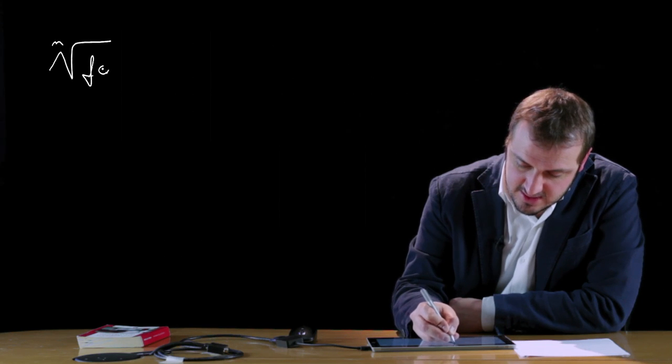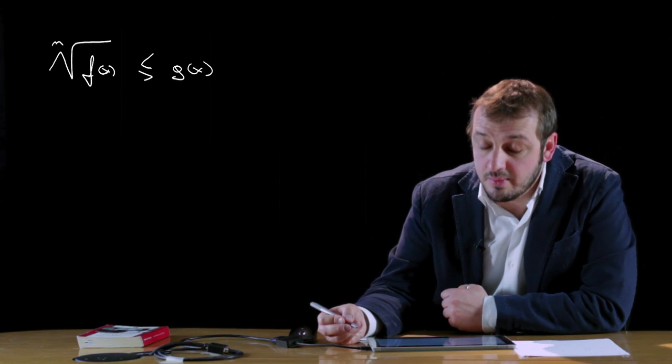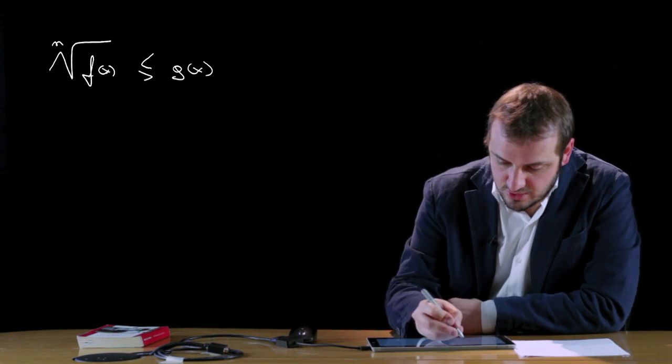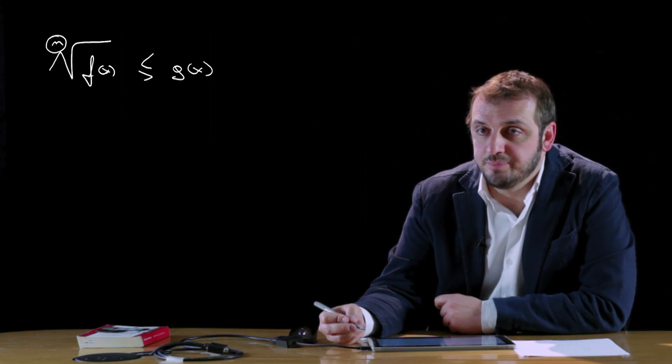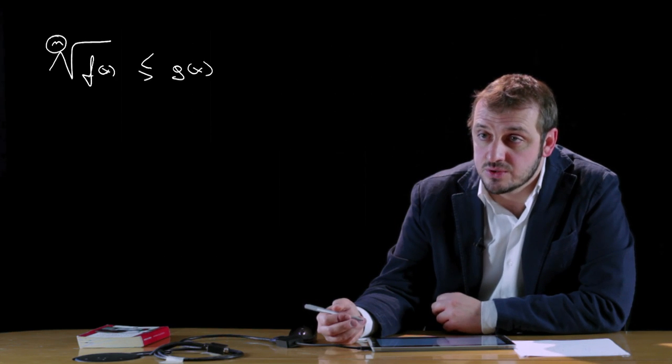Per quanto riguarda le disequazioni irrazionali, è necessario distinguere alcuni aspetti. In generale abbiamo la radice ennesima di f(x) maggiore o minore di g(x): questa è la tipica disequazione irrazionale da risolvere. La prima distinzione viene fatta su n, perché a seconda del suo valore cambia completamente la procedura da applicare.